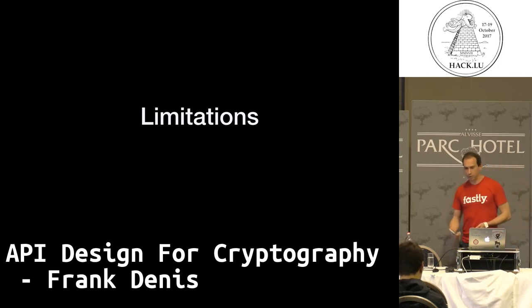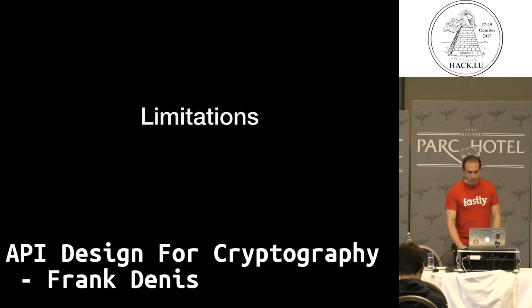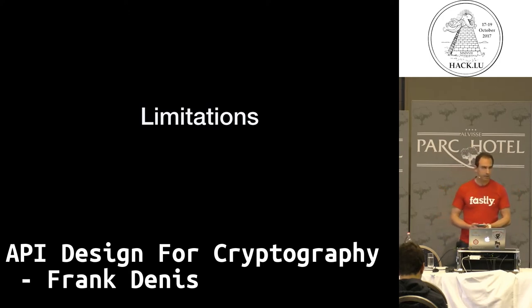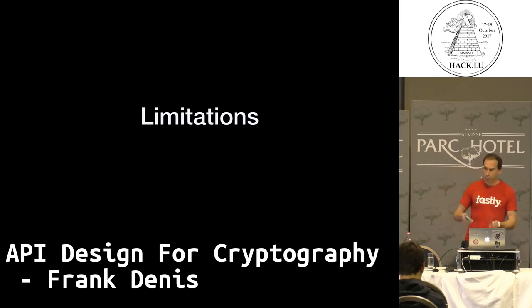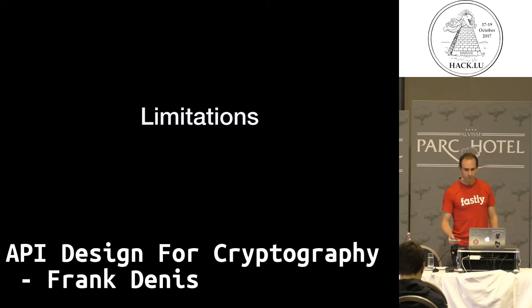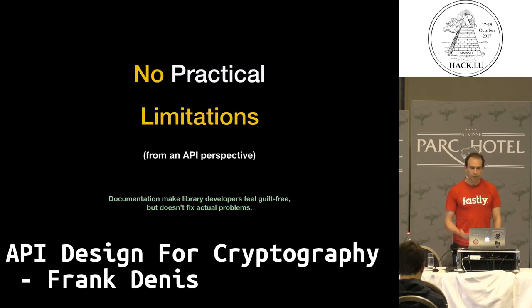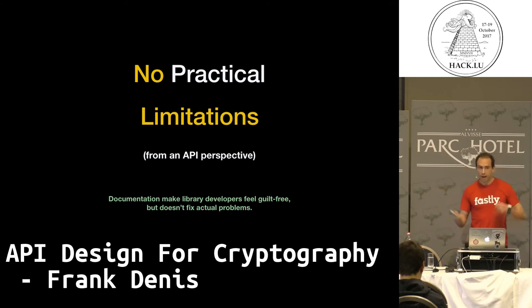Limitations: you can't use a key forever. You're supposed to rotate to a new key quite frequently, otherwise pretty bad things can happen. This is something you rarely see in crypto library documentation, but it can hit you really hard. It has huge implications for protocol and application design. This is not something applications should worry about — your API should hide these details and just perform key rotation itself when needed.